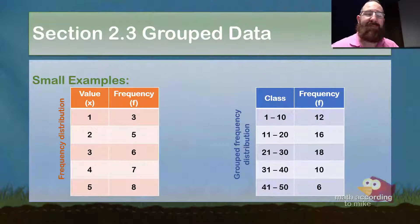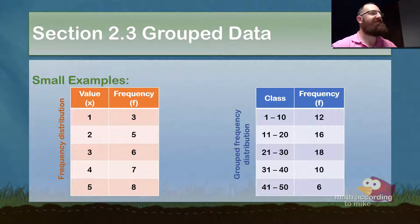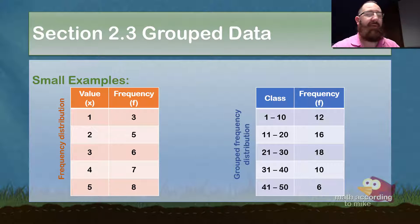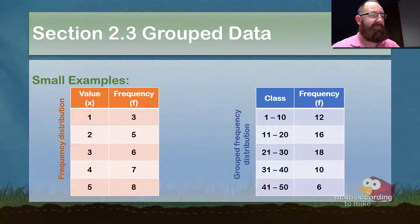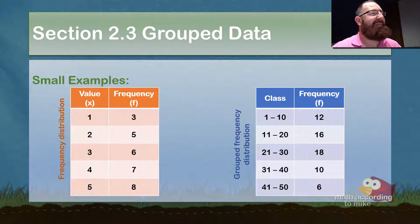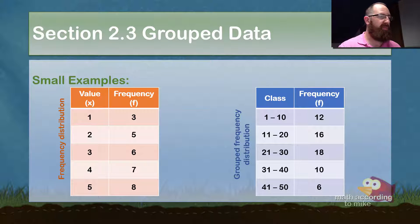On the left-hand side, we have a frequency distribution. In the first column of the orange one, we have the values — notice the variable x. The values are 1 through 5, and the frequencies are 3, 5, 6, 7, 8. Those numbers are all random, but what that means is that the number 1 appears 3 times and the number 2 appears 5 times, and so on.